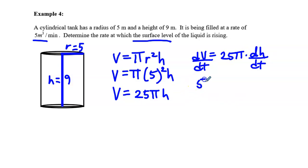We'll sub in 5 cubic meters per minute for dV/dt equals 25 pi times dh/dt.